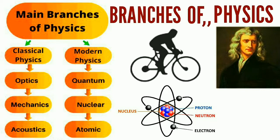Branches of physics. Science is an extraordinarily vast area of study comprising multifarious branches and different subjects. Each of the science subjects has its own importance in the world at large. There are three primary subject areas of science: physics, chemistry, and biology. Every other branch of science is born of these three primary subjects. When it comes to physics, it is a vast domain of study in itself with an array of branches to explore.